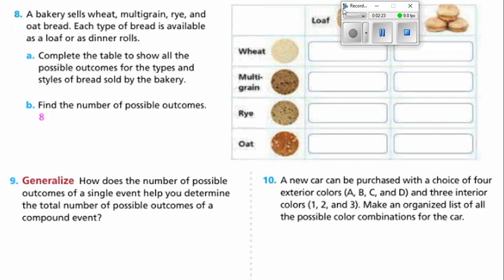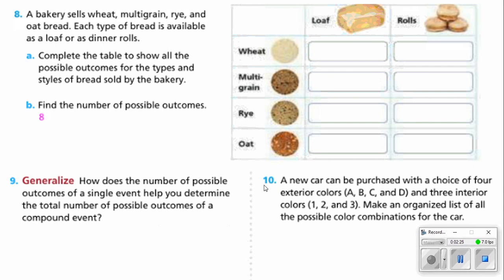Number 8 says a bakery sells wheat, multigrain, rye, and oat bread. That's 4 different types of bread. Each type of bread is available as a loaf or as dinner rolls. Complete the table to show all of the possible outcomes for the type and styles of bread sold by the bakery.